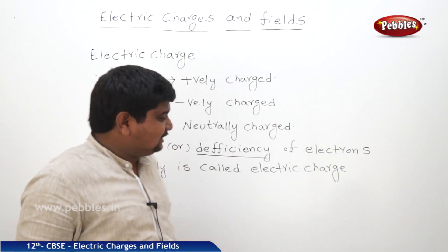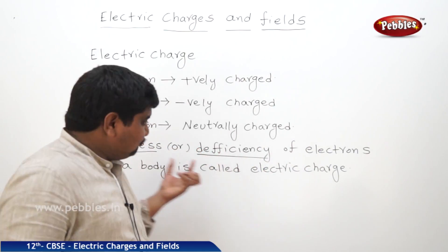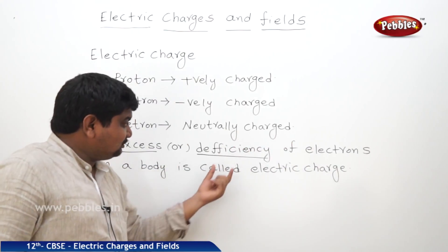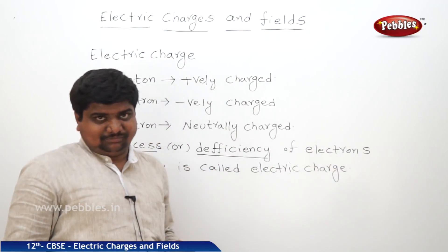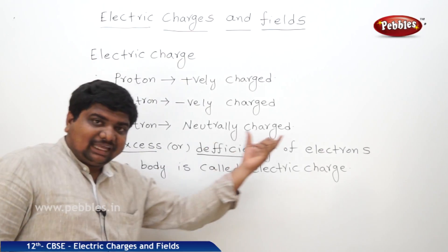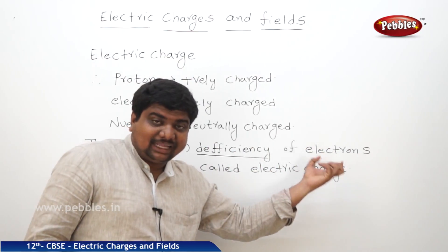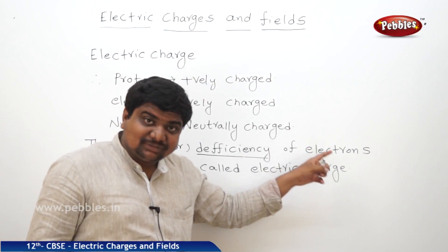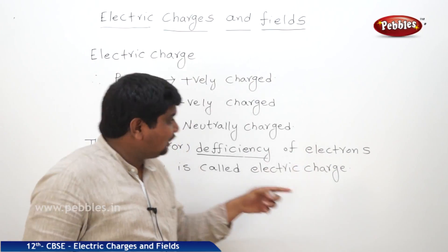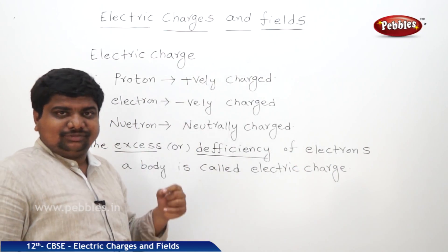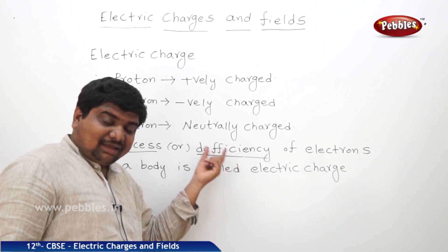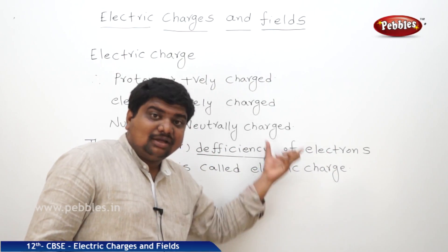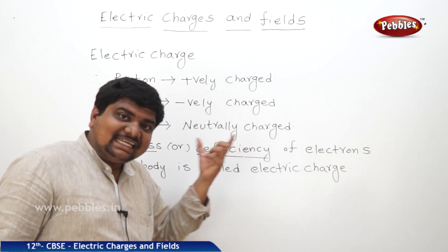That means some objects may have an excess number of electrons, and some objects lack electrons. If any substance gains excess electrons, that substance is called negatively charged. If any substance has a lack of electrons, that substance is called positively charged.